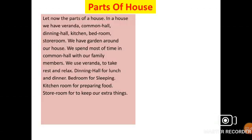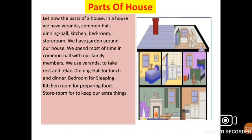Parts of a house: in a house we have a veranda, common hall, dining hall, kitchen, bedroom, and storeroom. We also have a garden around our house. We spend most of our time in the common hall with family members. We use the veranda to take rest and relax, the dining hall for lunch and dinner, the bedroom for sleeping, the kitchen for preparing food, and the storeroom to keep extra things.